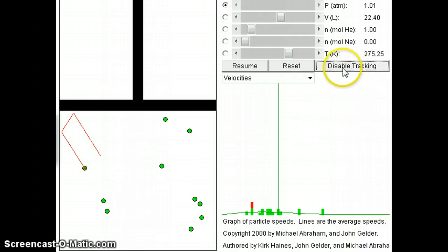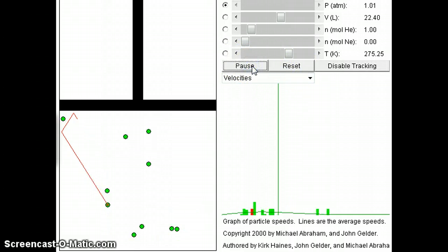What you see is that as I click enable tracking, it shows that the molecule basically goes here earlier and then it hits this part of the container and plunger. Then it goes this way, hits the wall of the container, and now it's hitting this way.